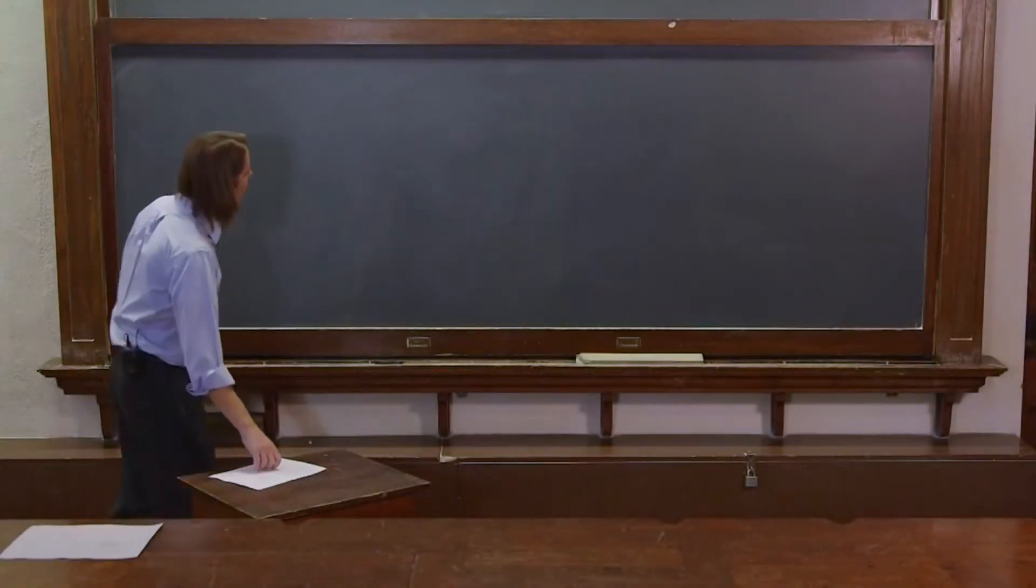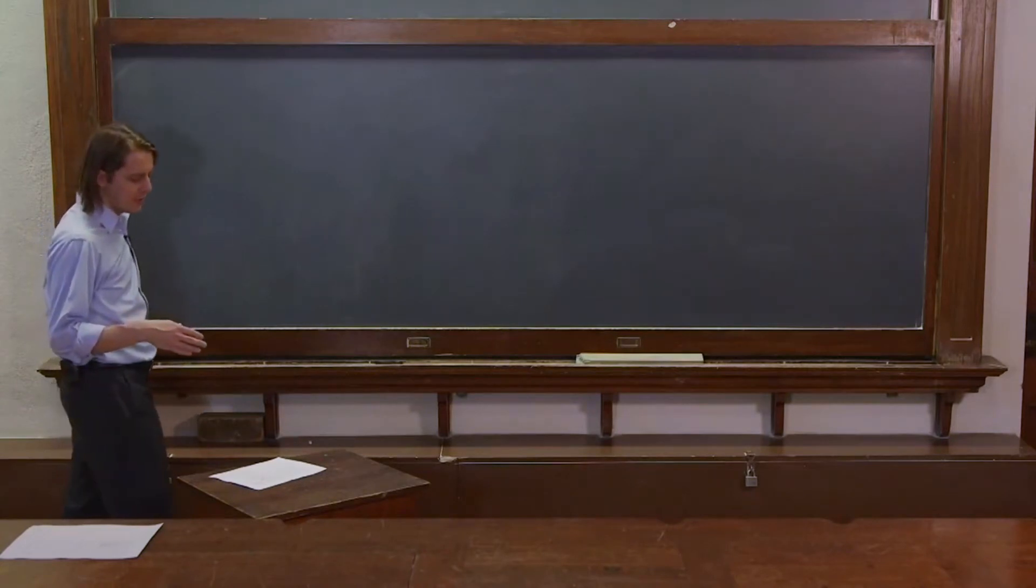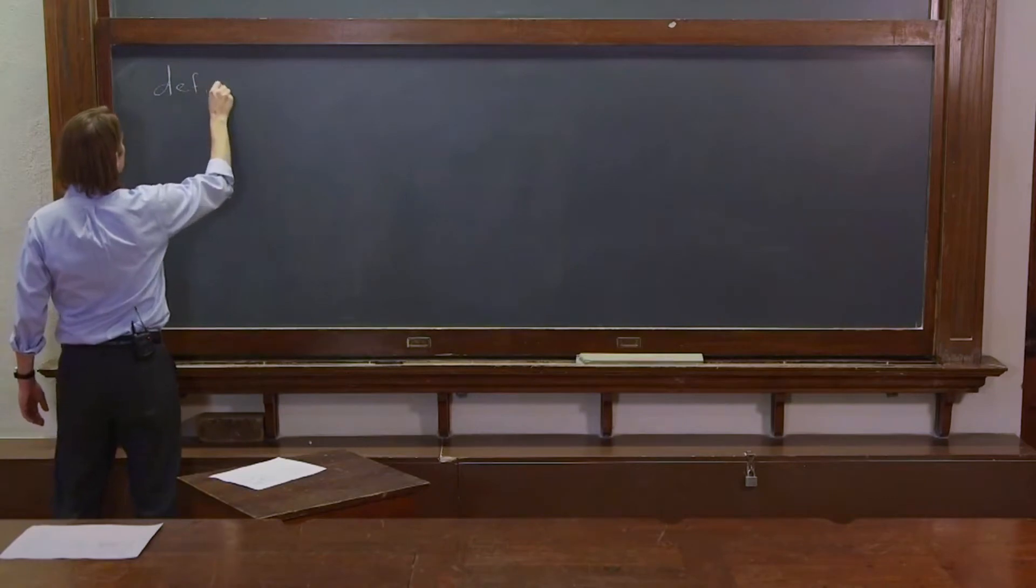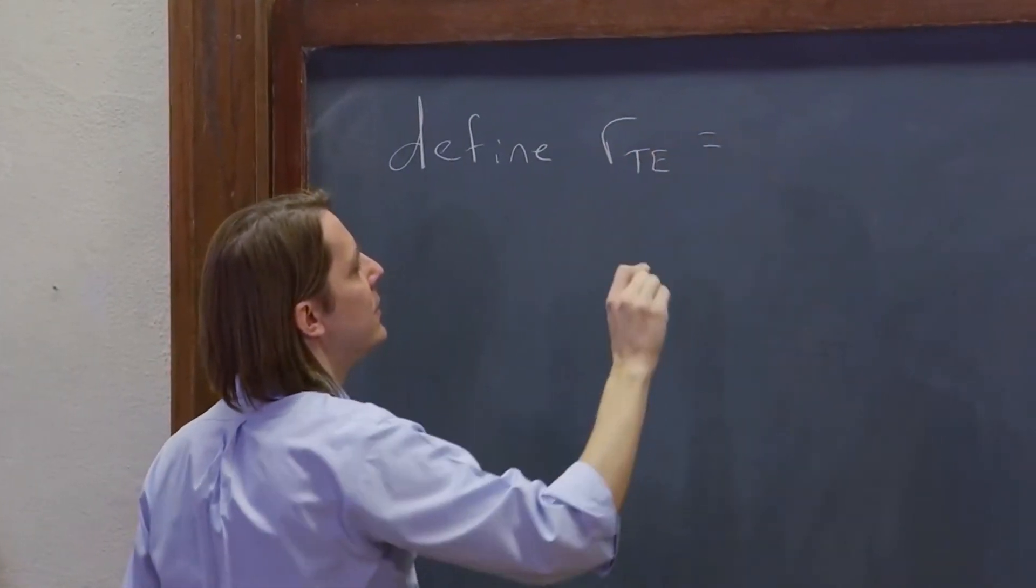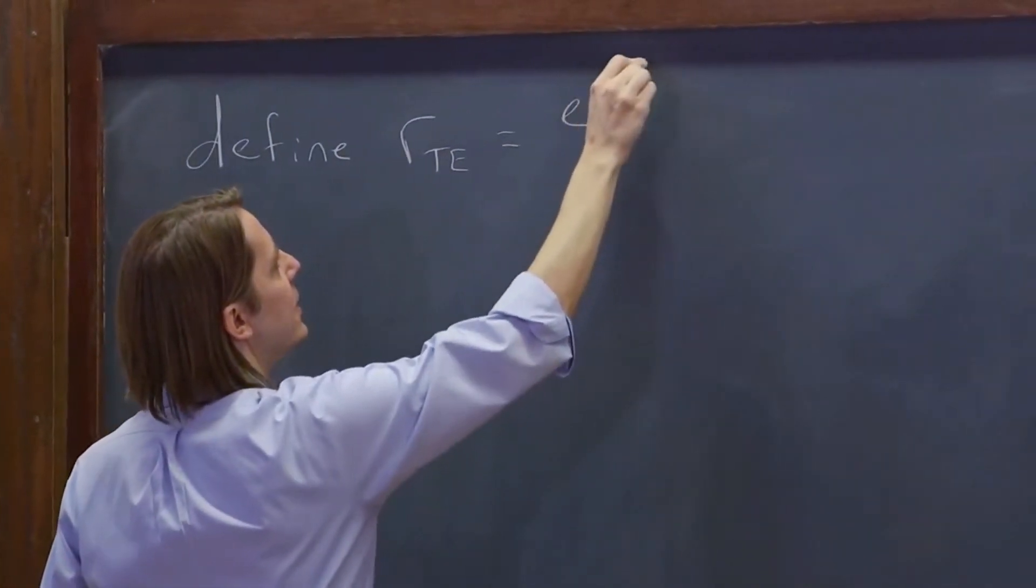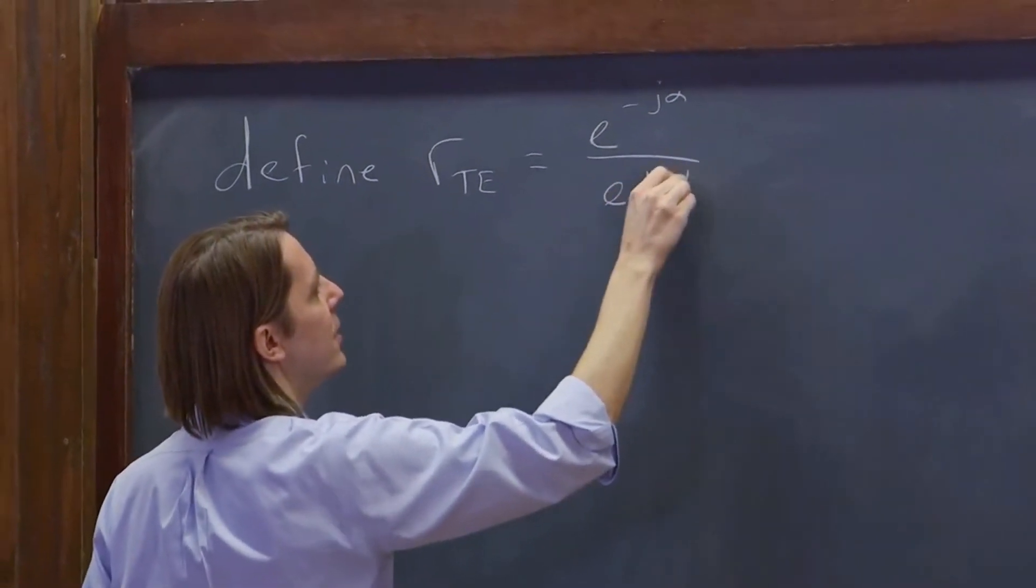To figure out what's going on in total internal reflection, we want to write the reflection coefficient in a different form. So we want to define RTE in this form: e to the minus j alpha over e to the plus j alpha.